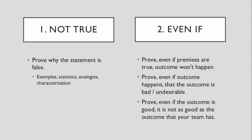Of course, it is probably impossible to feasibly conjure up all of these responses within the span of a single speech during a debate competition. So the effective approach is to start with the 'not true' response and then choose any one of the three even-if strategies that you think you can argue for best. The best case scenario would be one not-true layer and three even-if layers, but admittedly that is mostly not feasible. So do one of each and that will be considered a comprehensive two-step response.